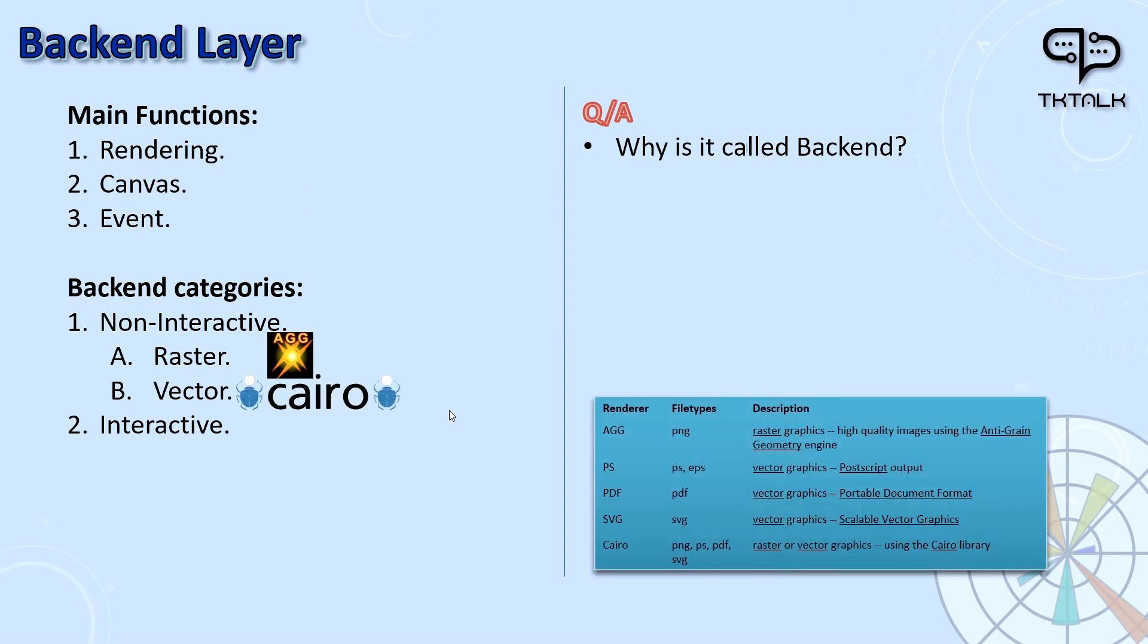This table shows the different available renderers. They are categorized if they support raster or vector graphics, or both in case of Cairo as mentioned before. It also shows the file extensions that can be generated by them.